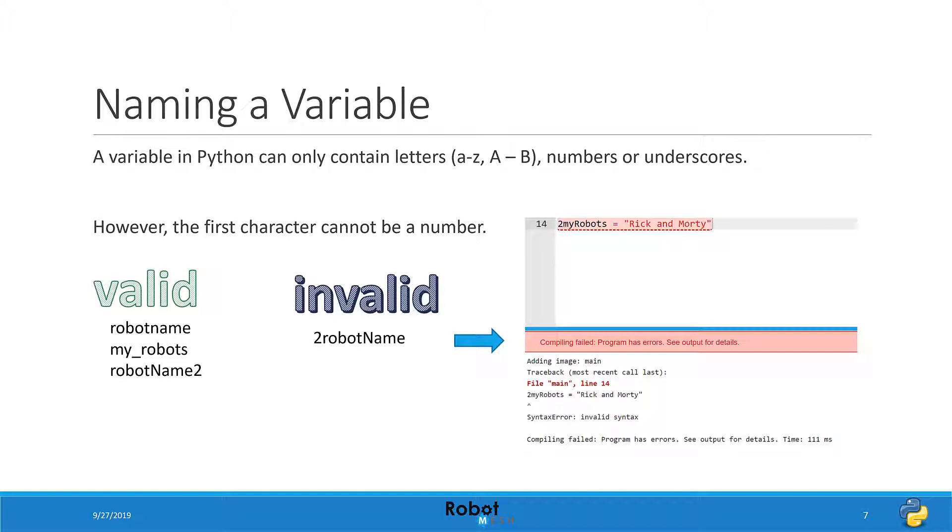On the left-hand side we see some examples of valid variable names. For example, robot name, all is one word, my underscore robots, and then we have robot name using camel casing, where every additional word in the name uses an uppercase letter, and the number 2. All perfectly valid.